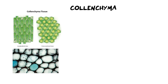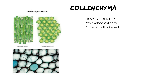The next tissue is colenchyma, which is sometimes confused with parenchyma because they look very similar. When we are trying to identify colenchyma we're looking for two things. Number one, we're looking for thickened corners — if you look at the micrograph you can see the corners are unevenly thickened. Compared to a parenchyma cell, one corner of a colenchyma cell can be very thick and then maybe another side of the cell will be much much thinner.